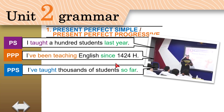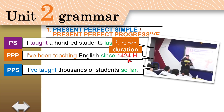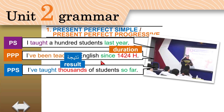What is the difference between the two? The duration here is what is important. Duration is the amount of years, the number of hours. What is important in Present Perfect Simple is the result — because I've been teaching for many years, the result of that is that I've taught thousands of students.